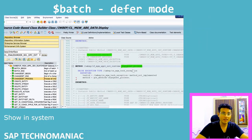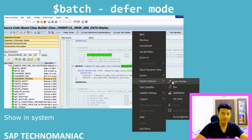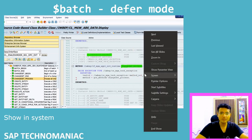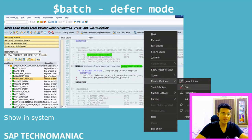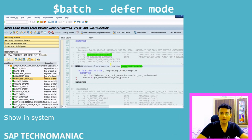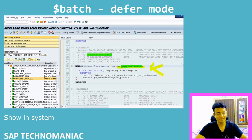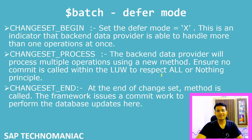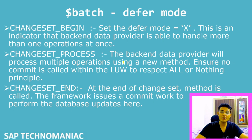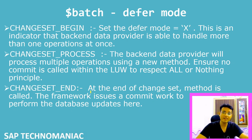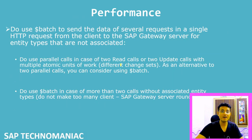Make sure you set CV_DEFER_MODE to 'X', then write your code in Change Set Process. Just as with the older approach, all operations in Change Set Process will be executed within a single LUW, so you must not write COMMIT WORK inside it. COMMIT WORK is executed automatically at the end of the Change Set End method by the framework.